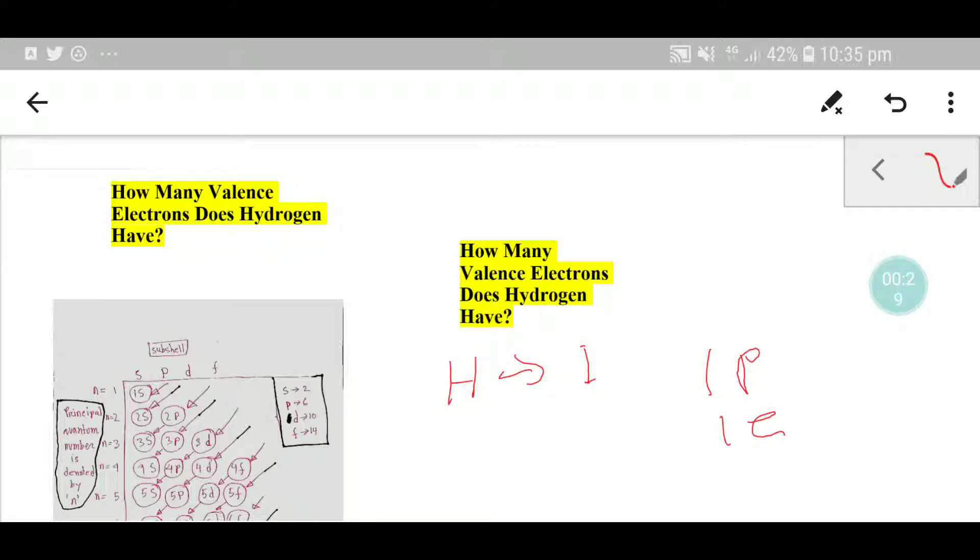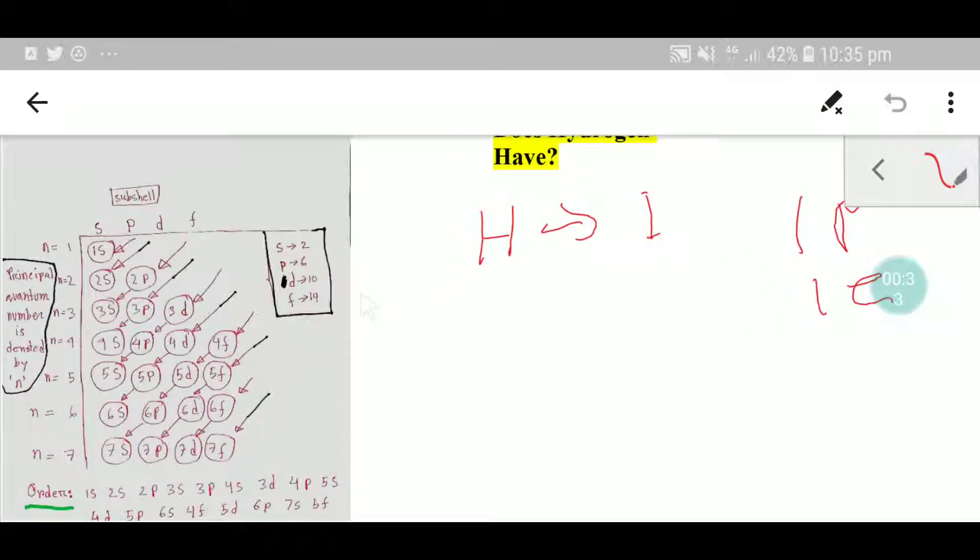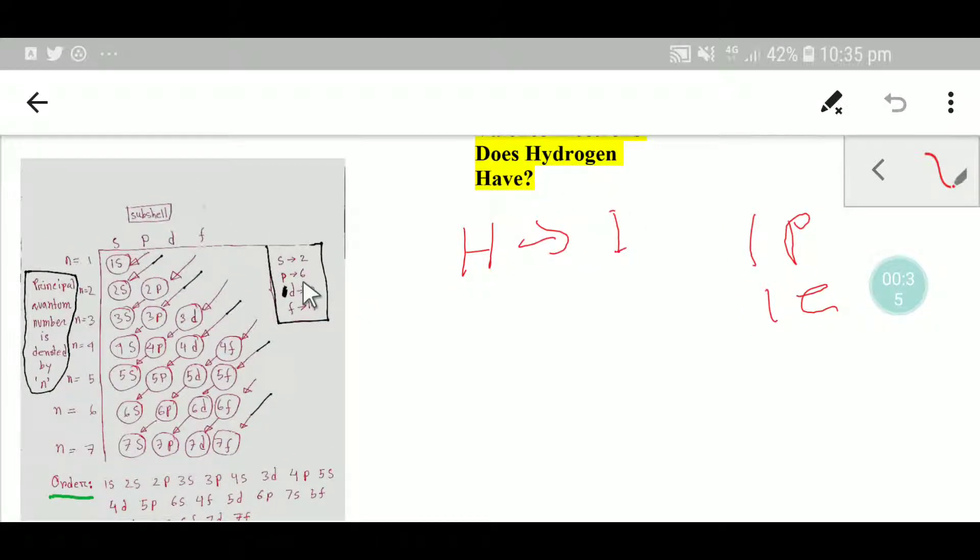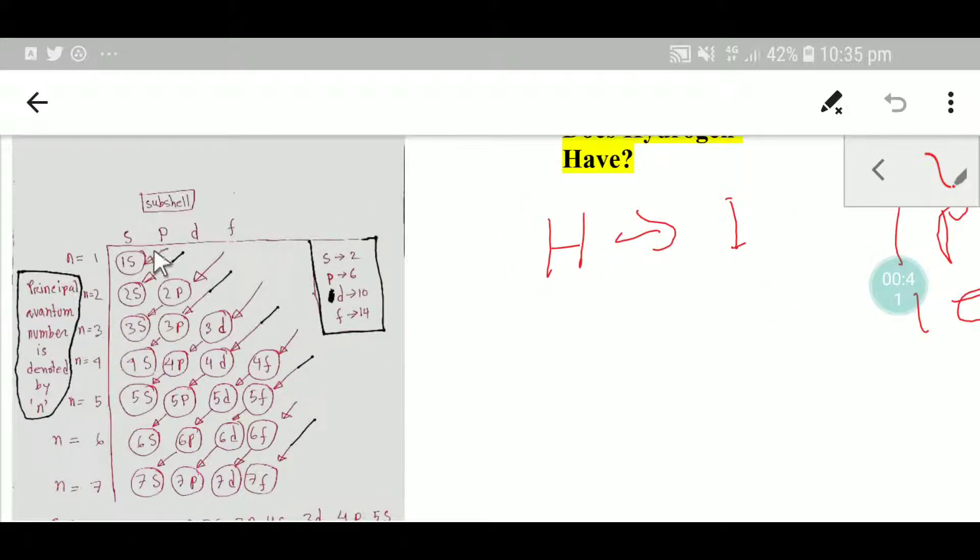In the second step, we'll do the electronic configuration of hydrogen. In case of electronic configuration of hydrogen, we have one electron. That's why one electron will go to one s orbital. So the electronic configuration of hydrogen is 1s1.